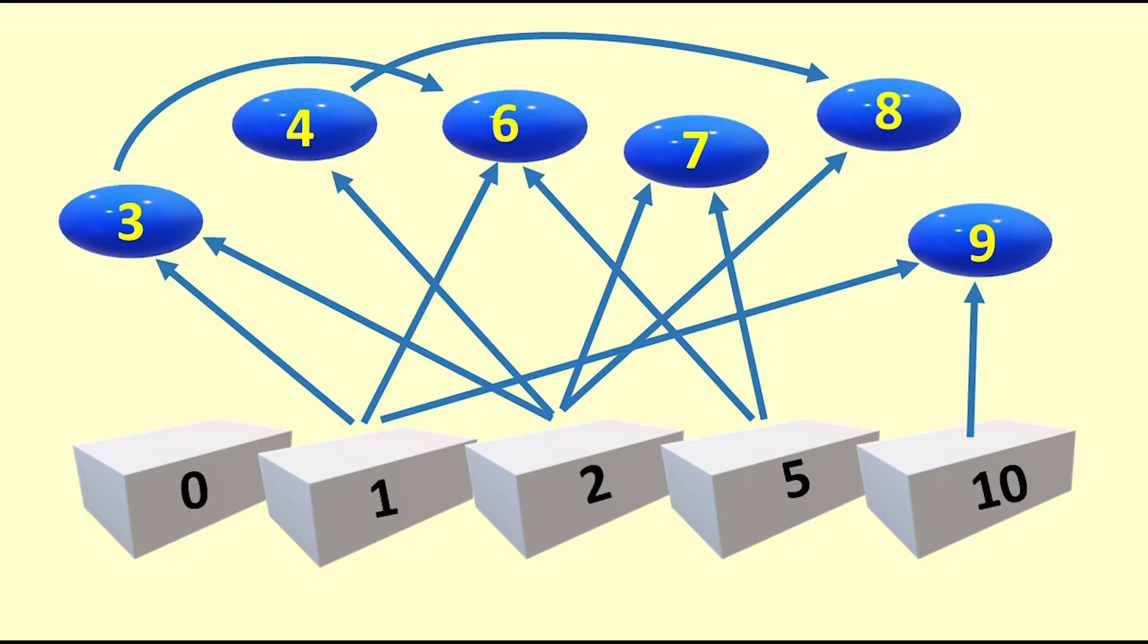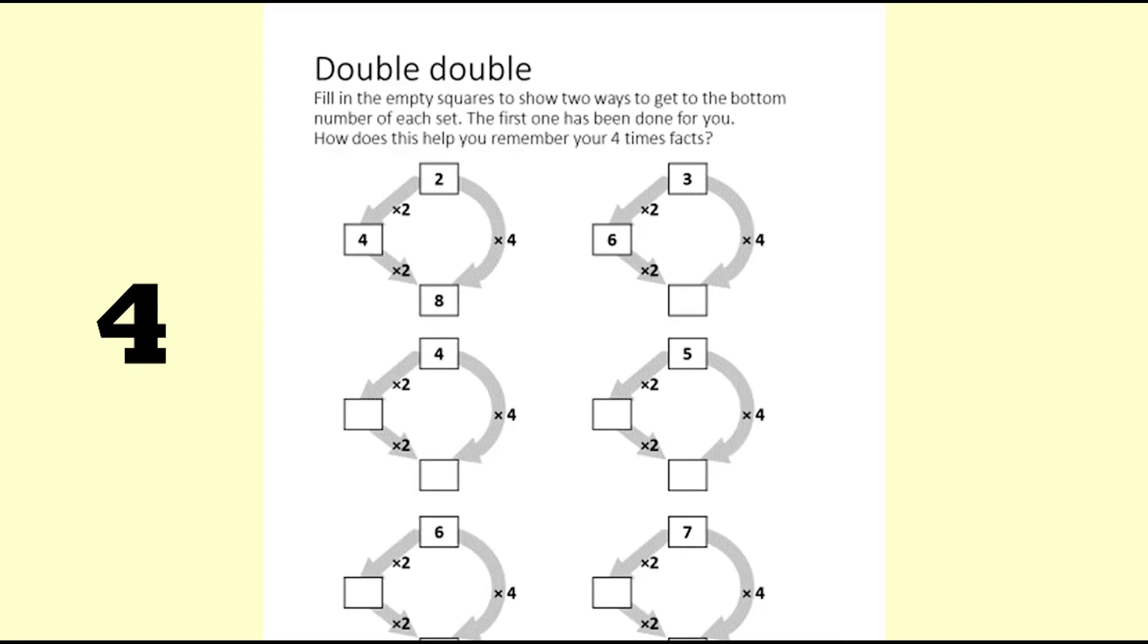Once the foundational facts are mastered, the other tables can be built up from them one at a time. The 4 times table is double and double again, or 2 times 2 times. If we double again, we get the 8 times table.